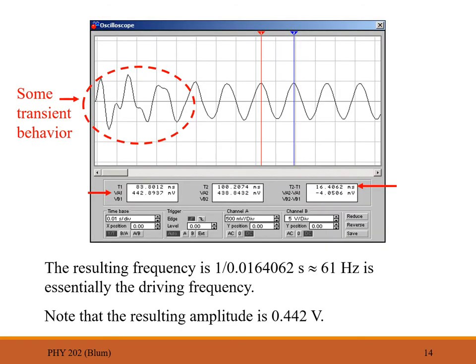Here is the oscilloscope reading for the driven LC circuit. We see some transient behavior at the beginning, then it settles into a nice oscillatory pattern. Using our two needles to measure the period, we find about 16 milliseconds, or 0.016 seconds, corresponding to 61 hertz — close to the driving frequency. The amplitude reaches about 0.442 volts.